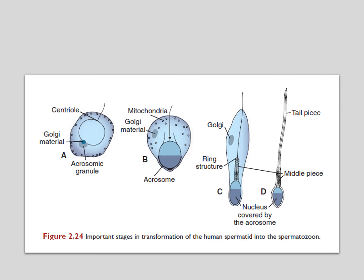When fully formed, the spermatozoa enter the lumen of the seminiferous tubules. At this point they are only slightly motile. From there, they are pushed toward the epididymis by contractile elements in the wall of the seminiferous tubules. The spermatozoa obtain full motility inside the epididymis.